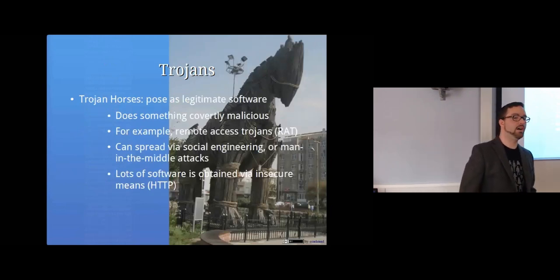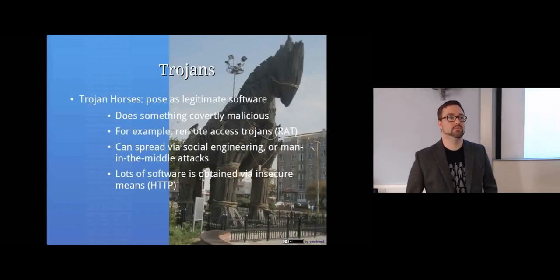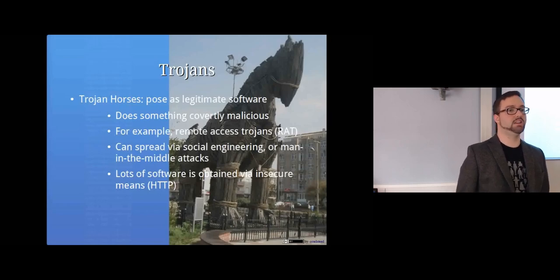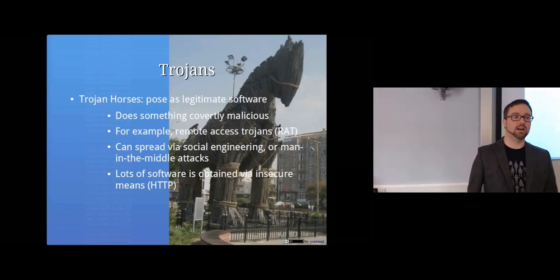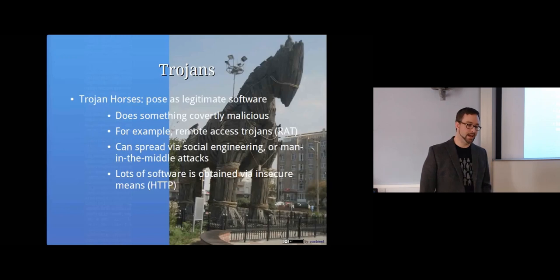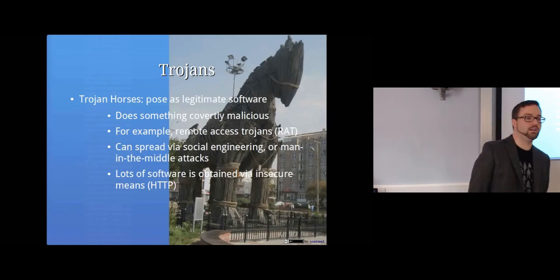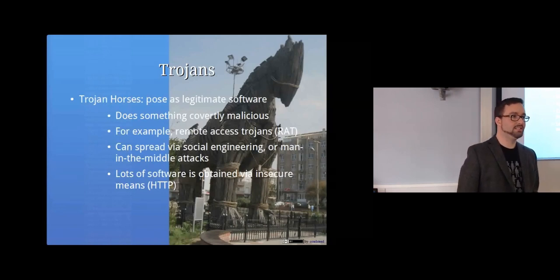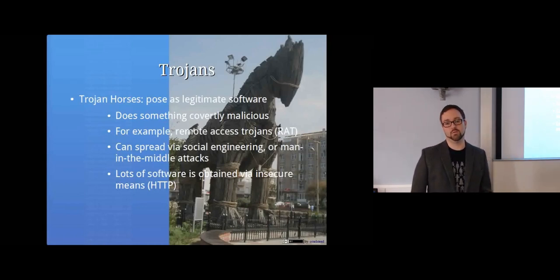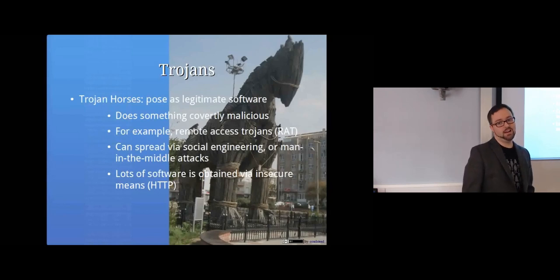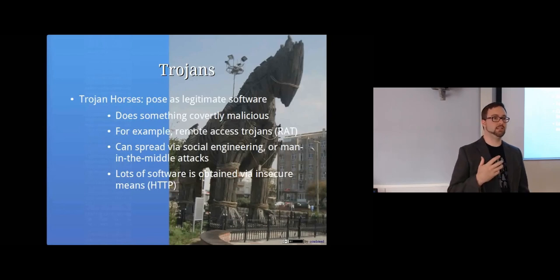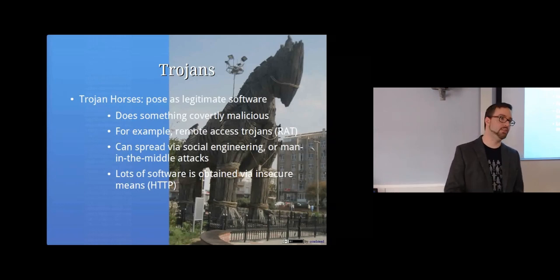Another major category of malware is Trojan horses. A Trojan horse is a program that looks like it does one thing but actually does something else. For example, you send someone a game, but it actually does something else to their computer. It has a covert and an overt action — the overt thing the person is aware of is benign, while the covert action is malicious. One type is a remote access Trojan, or RAT, which gives someone else the ability to log in and take control of a computer, accessing files, uploading and downloading files, or controlling the mouse.